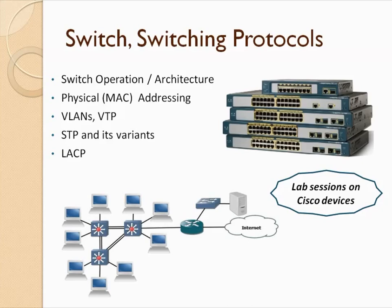I'll then explain Spanning Tree Protocol. In today's enterprise networks you need redundancy — if a link fails, you need an alternate route. But redundancy can cause looping when a broadcast packet circulates across multiple paths. I'll explain how STP prevents that, along with all its variants: Rapid STP, MSTP, and per-VLAN STP.